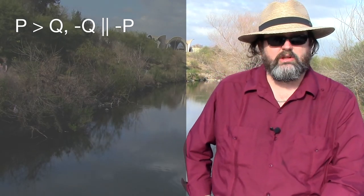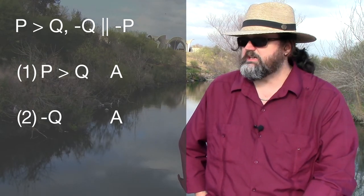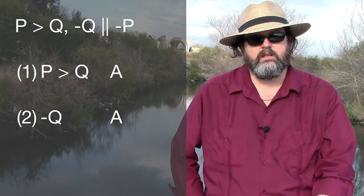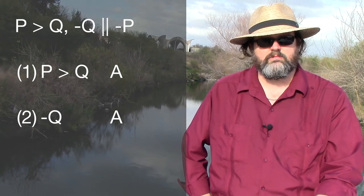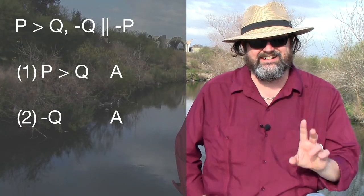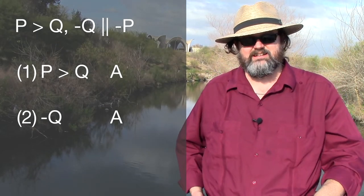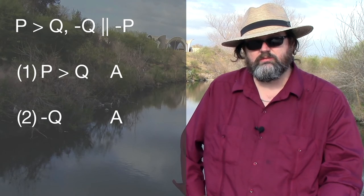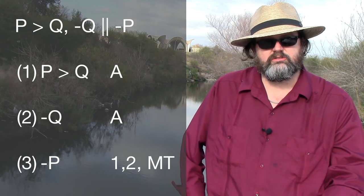As before, we follow our rules for formalization. Line one is the conditional if p, then q. Line two is the denial of the consequent — we use the minus sign on our keyboard for negation. We cite both with A. The sequence reads: p greater-than-symbol q, comma, negation of q, two vertical lines, negation of p. Lines one and two both get citation A.